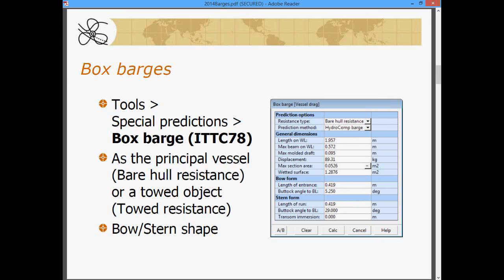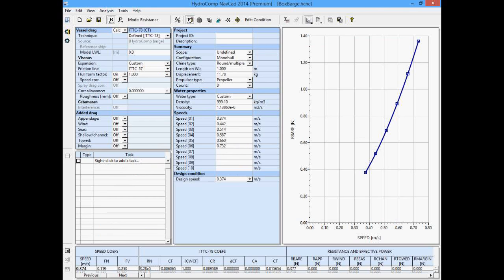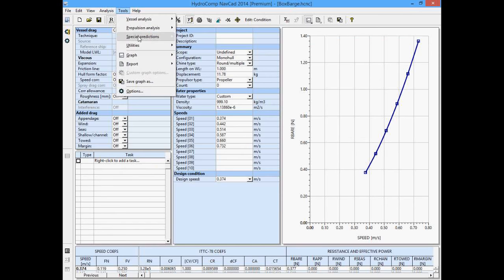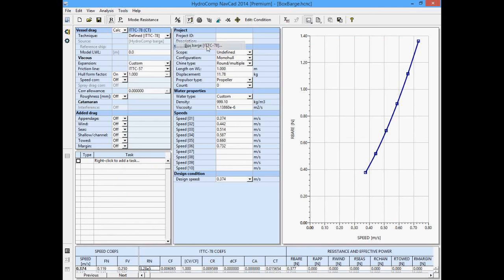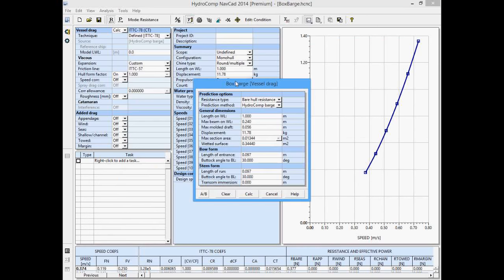Let me shift over to NAVCAD here so we can show you where this would be. In the main menu, here at the top, you'll see a tools, special predictions, and then these are where these kinds of external or unusual hull forms, submarine swath, box barge, and barge train, will be defined. So, we click on the box barge, and that will pop up this data entry window here.